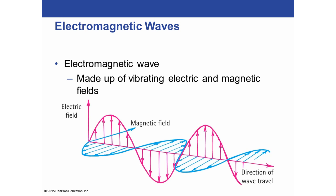An electromagnetic wave is a vibrating of electric and magnetic fields, and it makes a transverse wave pattern — an up-and-down motion. The electric field goes up and down, the magnetic field goes in the other plane, in the other direction, and the wave overall moves along down that path.